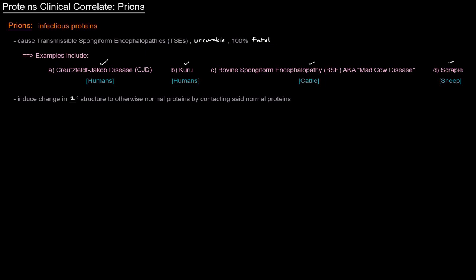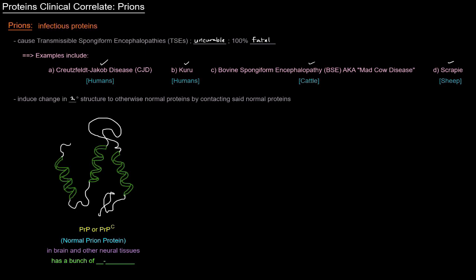So there's a protein called prion protein, which is a normal protein in our brain and other neural tissues. And this is kind of my representation of it. The key thing there is that it's designated PRP or PRP^C, and that just stands for prion protein. And it's normal. Like I said, it's a normal protein that exists in our brain and other neural tissues. And it has a bunch of alpha helices. Got a bunch of alpha helices.